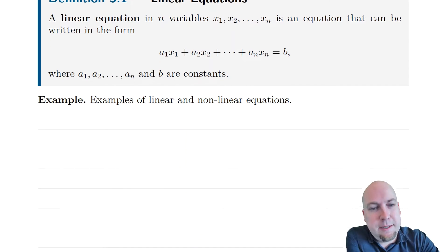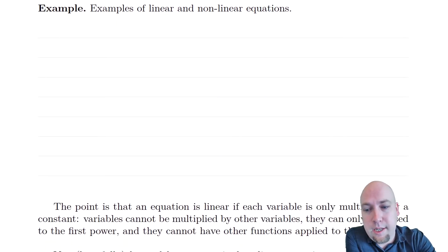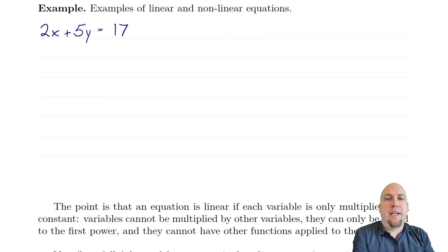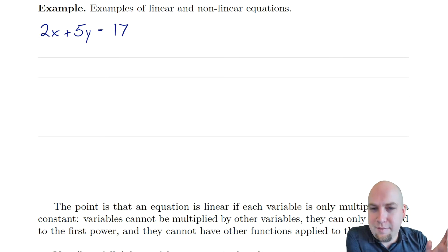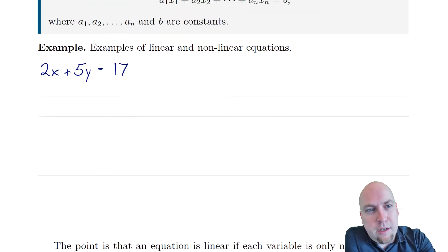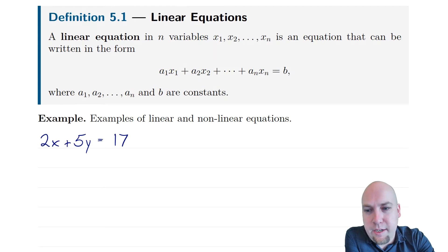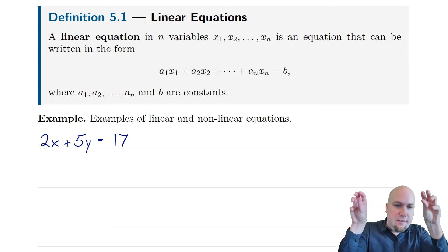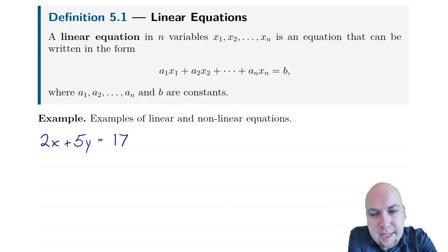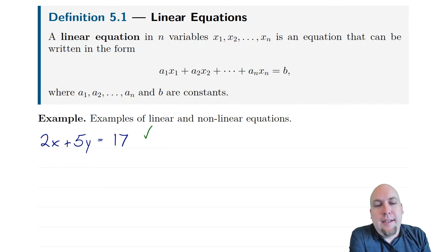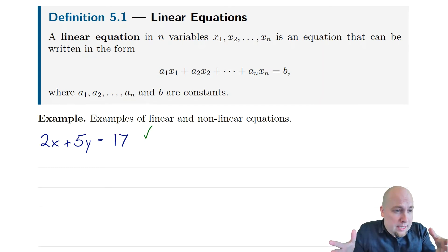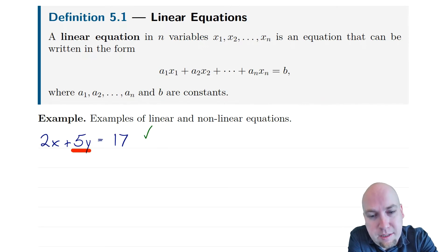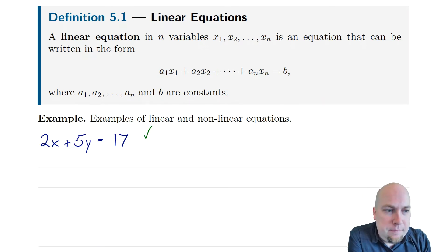Let's go through some examples. First: 2x + 5y = 17. Is that a linear equation? Yes — x and y are the two variables, 2 and 5 are my a1 and a2 (the constants in front of those variables), and 17 is b, the right-hand side. That's a linear equation: some multiple of a variable plus some multiple of a variable equals a number.